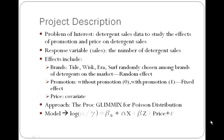The method I'm using in this project to determine the effect of brands, promotion, and price on the sales is the generalized linear mixed model. I am using PROC GLIMMIX in SAS software for the Poisson distribution. In the model specification, because of the Poisson distribution, I have the log of mu of detergent sales over gamma equals the intercept plus the fixed effects plus the random effects with the covariate price and the random error term.